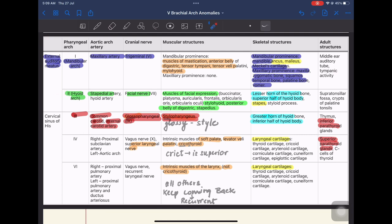The second arch or the hyoid arch, the artery is the stapedial artery, the nerve is the facial nerve and we derive the muscles of facial expression from the second arch. They are namely buccinator, platysma, auricularis, frontalis, orbicularis oris and oculi. The stylohyoid muscle, the posterior belly of digastric and the stapedius muscle.